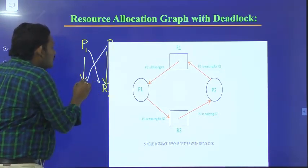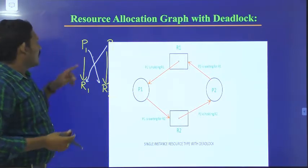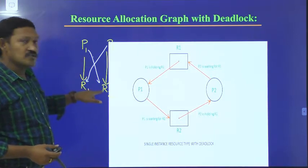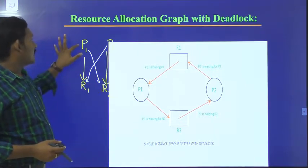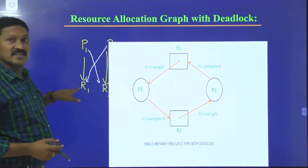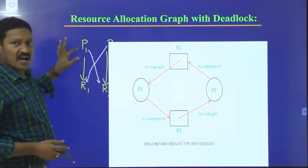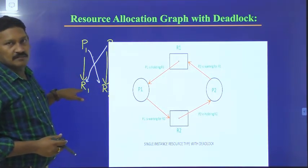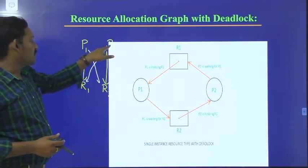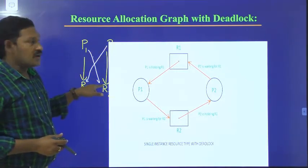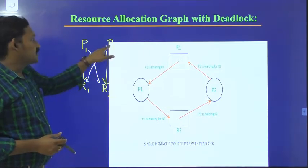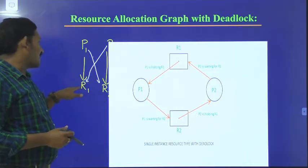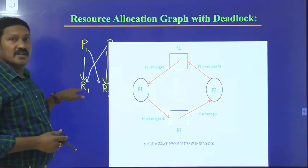Process P1 is holding resource R1 and P1 is waiting for resource R2. P1 is not releasing R1 — P1 thinks that when it gets resource R2, then it will release R1. Similarly, process P2 is holding resource R2 and it is waiting for resource R1. P2 thinks it will release R2 only when it gets R1.